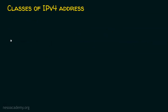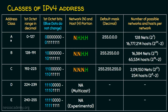We know there are basically 5 classes of IPv4 address: class A, B, C, D, and E. Class D is for multicast purpose and class E for experimental purpose. We are going to focus only on class A, B, and C. The default subnet mask for class A is 255.0.0.0, for class B is 255.255.0.0, and for class C is 255.255.255.0.